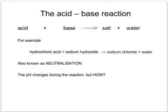The acid-base reaction produces a salt plus water. For example, hydrochloric acid and sodium hydroxide would make sodium chloride and water. Because you end up with a neutral solution at pH 7, the reaction is called neutralisation, and the pH changes during the reaction. What we're going to look at next is how that changes when it's plotted onto a graph.